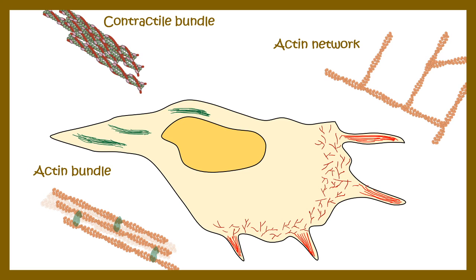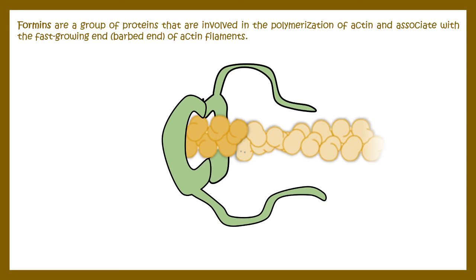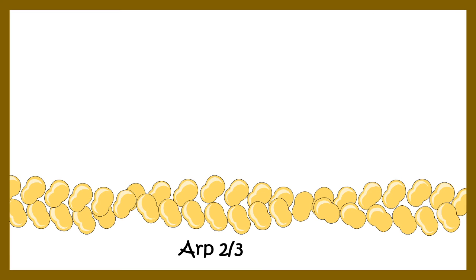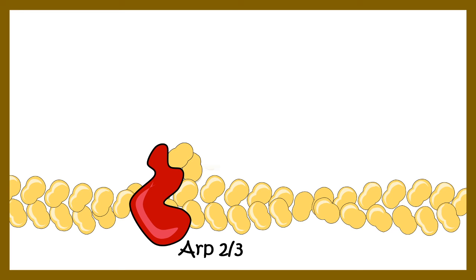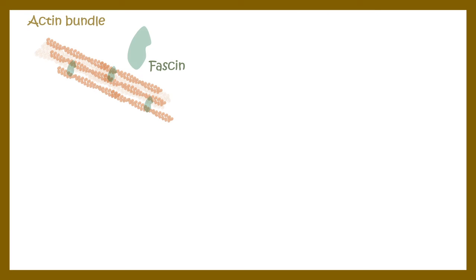Let us talk about proteins that help in the polymerization process. The most important are formins — a group of proteins involved in actin polymerization that associate with the fast-growing barbed end and also help in the nucleation process. Another important protein complex is ARP2/3, which has a branching function: it can bind to an existing actin microfilament and initiate a new branch at that site.